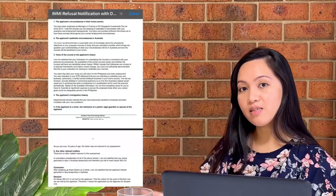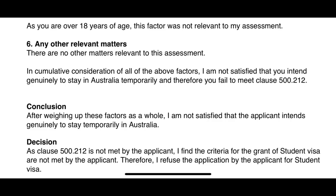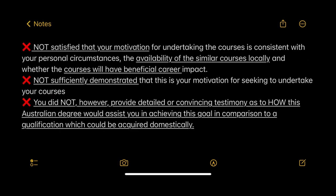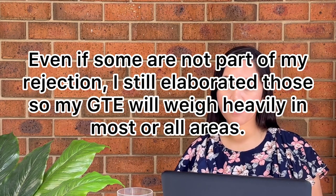After two weeks I received my refusal letter. From my refusal letter I first identified the basis of my rejection and I took notes from it. Going back to my story — when I received my refusal letter, I told myself that I will just do what I think is best: to elaborate everything, even if some parts are not the basis of my rejection.